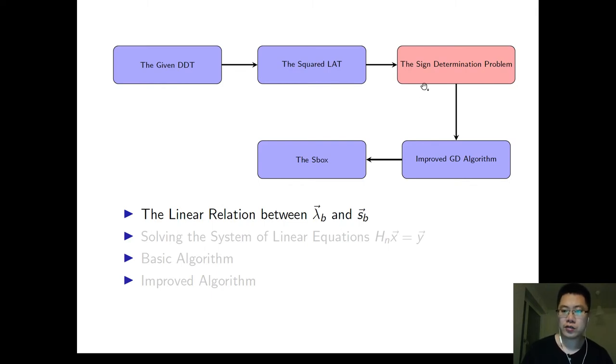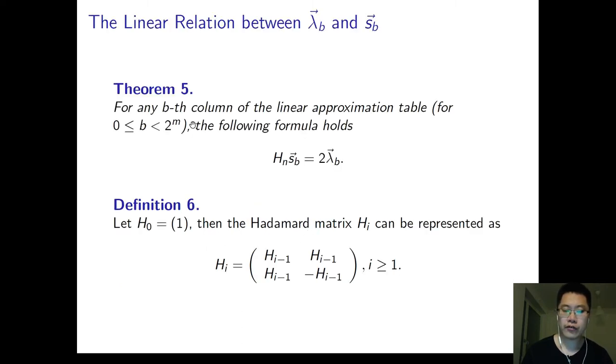So next, we will propose a new algorithm to solve the sign determination problem. We firstly introduce the linear relation between lambda B and S-B. For any B column of the linear approximation, the following formula always holds. For the formula here, HN refers to the Hadamard matrix.